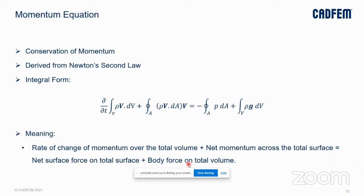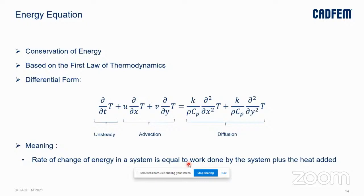Next, we look at the momentum equation. This is based on Newton's second law and represents the conservation of momentum. Its meaning is that the sum of the rate of change of momentum across a volume and the net momentum across the surface is equal to the total surface force plus the total body force combined. The energy equation represents the conservation of energy based on the first law of thermodynamics. Its meaning is that the rate of change of energy with time equals work done by the system plus heat added to the system. The equation contains the unsteady term tracking temperature variance with time, a term tracking temperature change due to fluid flow velocity, and the diffusive term tracking temperature change due to viscous forces.